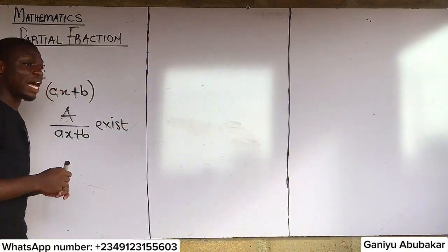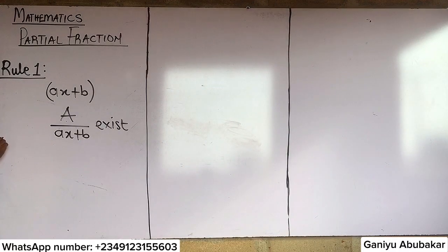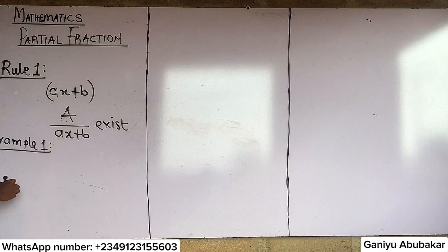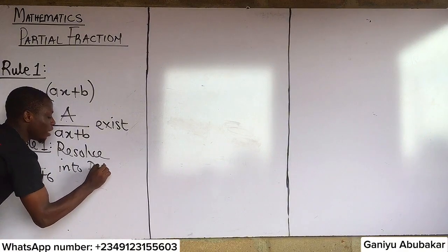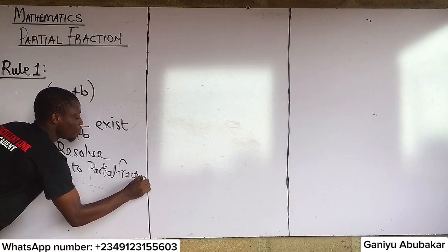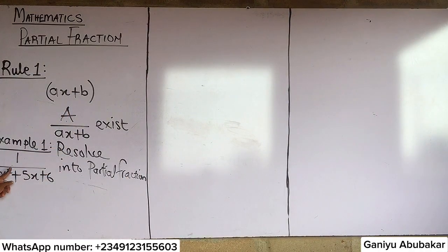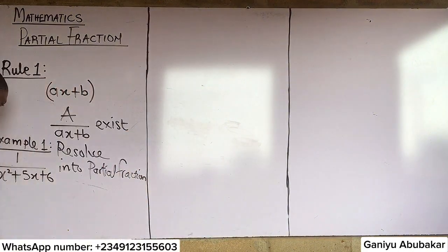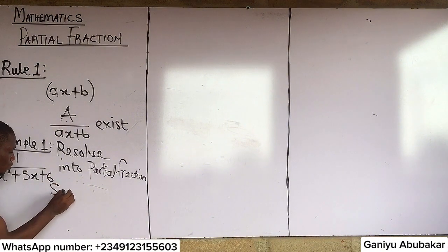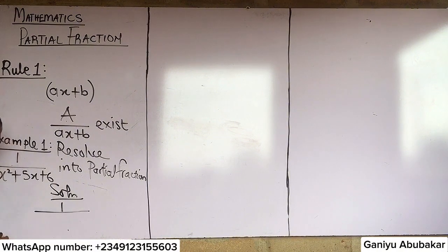Let's explain Rule 1 using an example. Example 1: Resolve 1 over (x² + 5x + 6) into partial fractions.